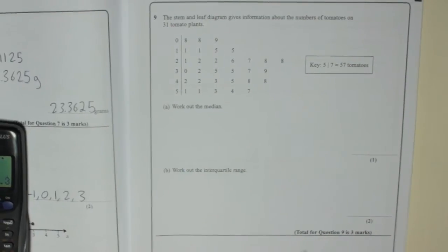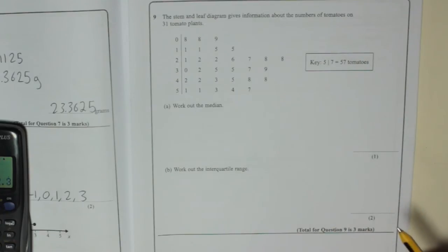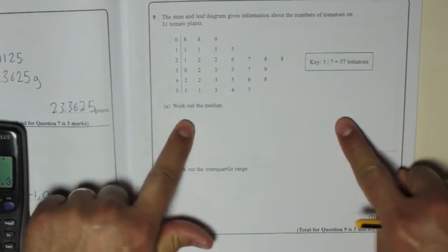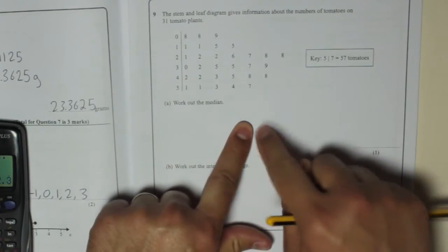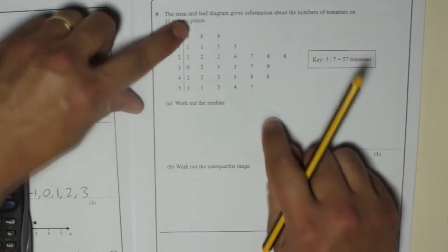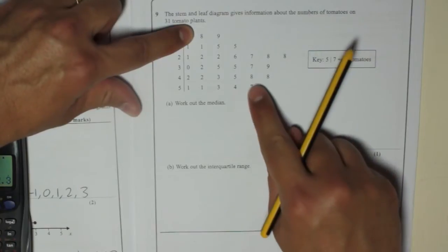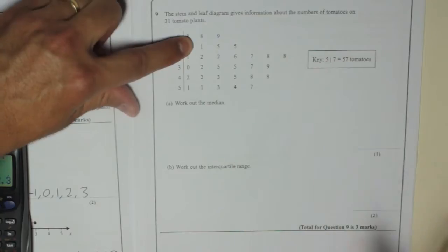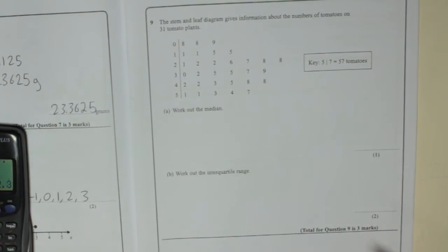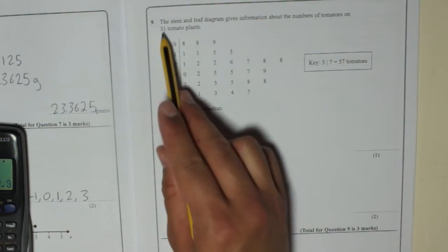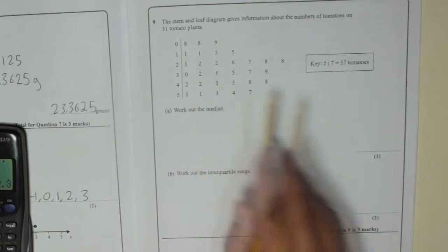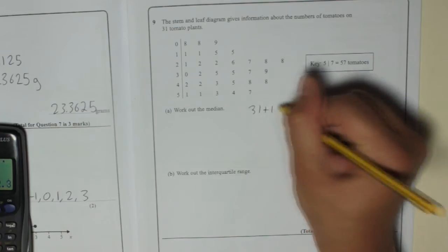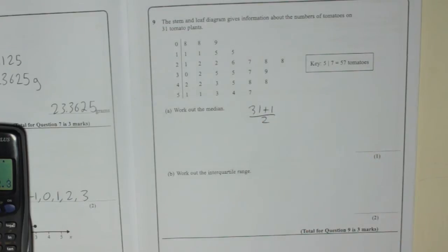Now the median is usually when you put them in order and people will do that, go down the list and reveal the one in the middle. Now it's going to be hard to do that. You could put one finger there, one finger there and go in like that, but you might make a mistake. So what I'm going to do is find the middle. There are 31 numbers in total, so the median is at 31 plus 1 divided by 2. That's how you find the middle position.